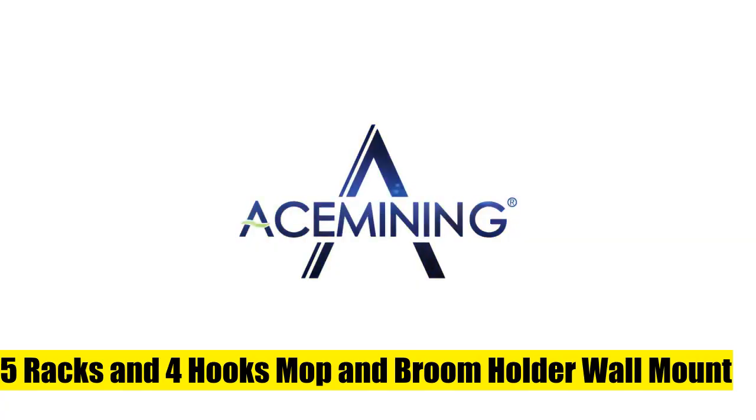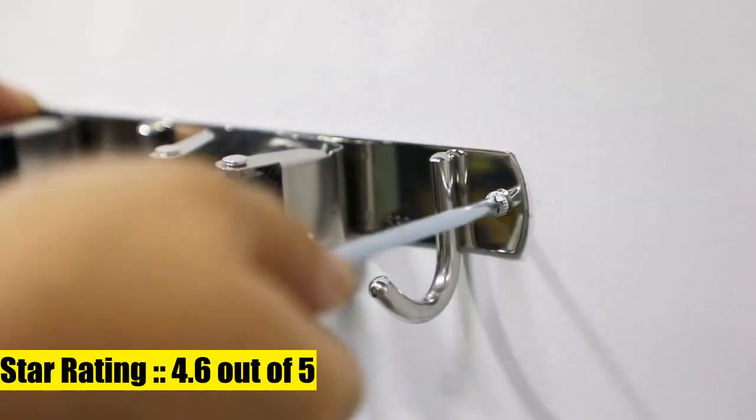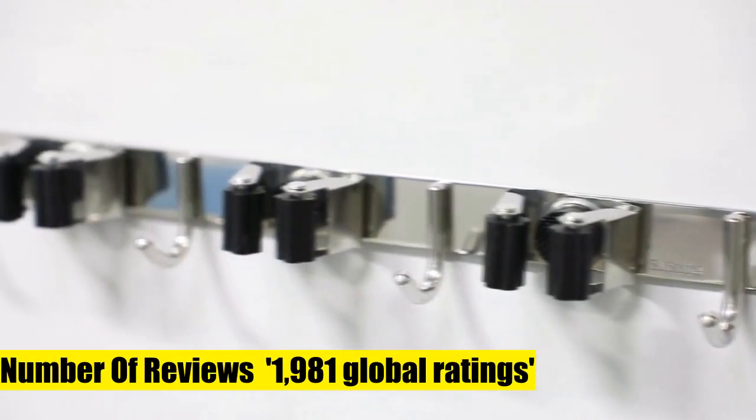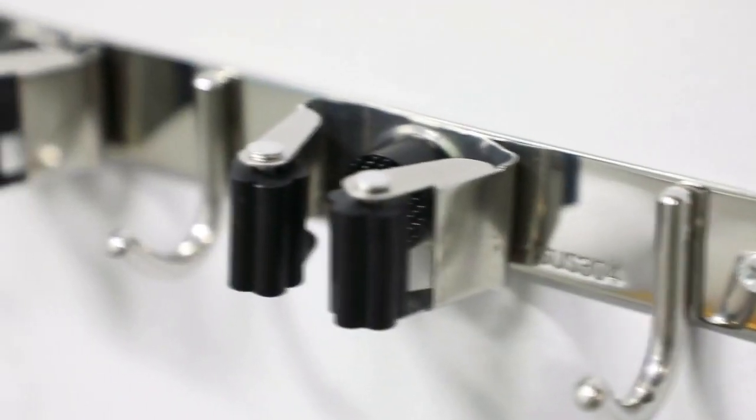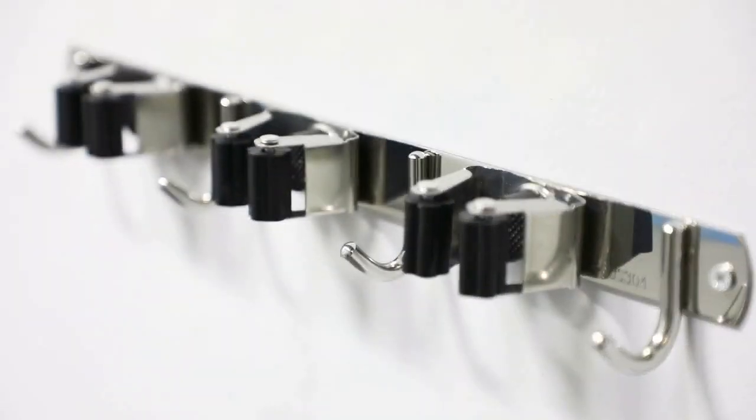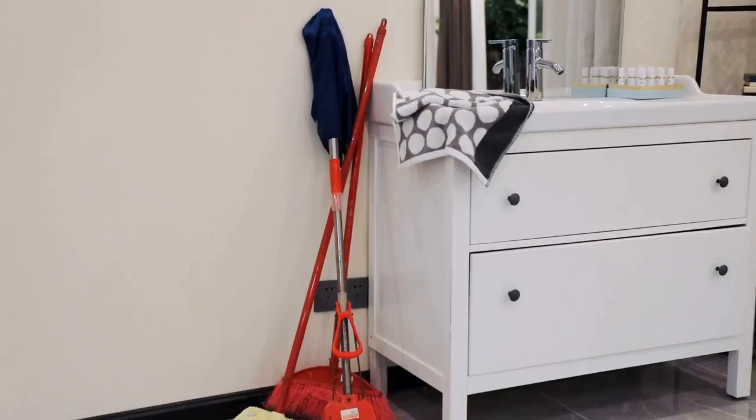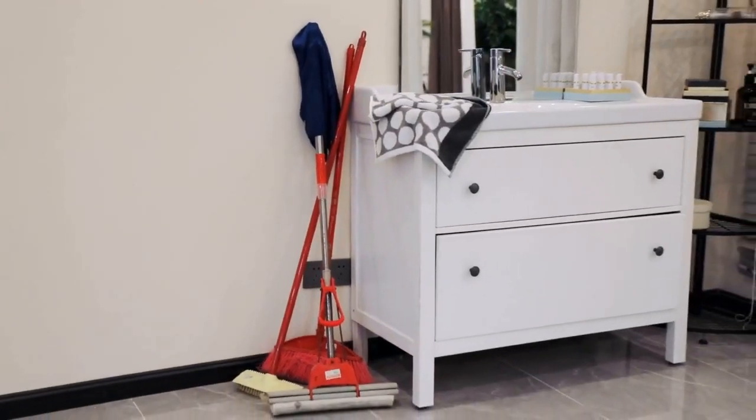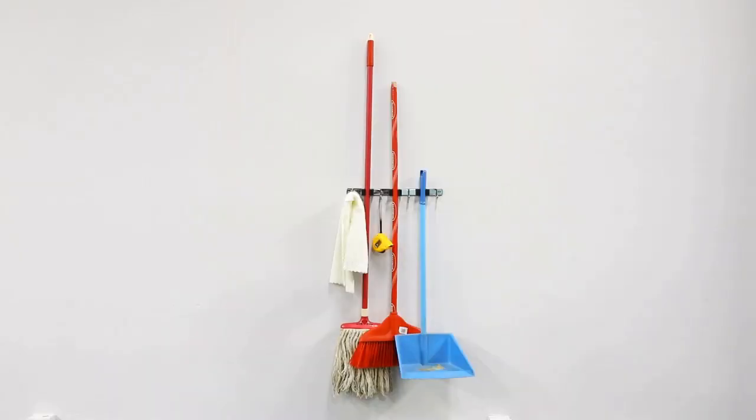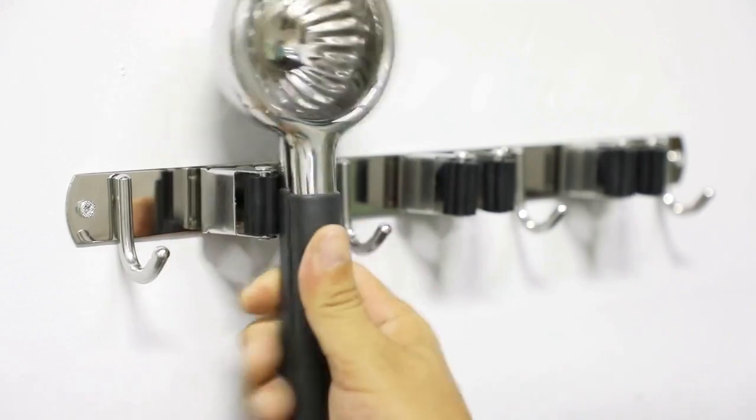Five racks and four hooks mop and broom holder wall mount with strongest hold and non-slip design. Made of rust-proof 304 stainless steel, more durable than plastic materials. Holds items up to 30 pounds when secured with screws or 8 pounds with self-adhesive. The broom hanger combines anti-skid silicone preventing scratches with slots or double rubber grip to help keep a stronger hold on your items.